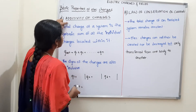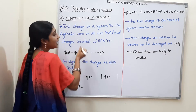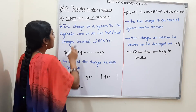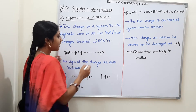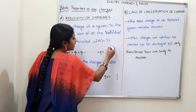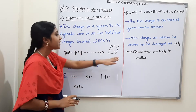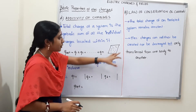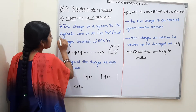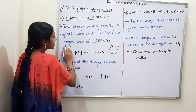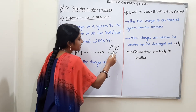Let's talk about that. The first one is the Additivity of Charges. What is the Additivity of Charges? That means the total charge of a system — there are many charges in any object. The total charge of this system is the algebraic sum of all the individual charges located within it. This is the additivity of charges.